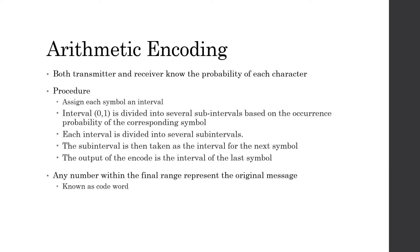The next step is entropy encoding. For my entropy encoding, I chose arithmetic encoding. In arithmetic encoding, both the transmitter and receiver must know the probability of each character occurring. We first assign each symbol an interval within the range of 0 to 1. The subinterval is then taken as the interval for the next symbol. The output of the encode algorithm is the interval of the last symbol, so any number within the final range interval represents the original image or message. This is known as the codeword.